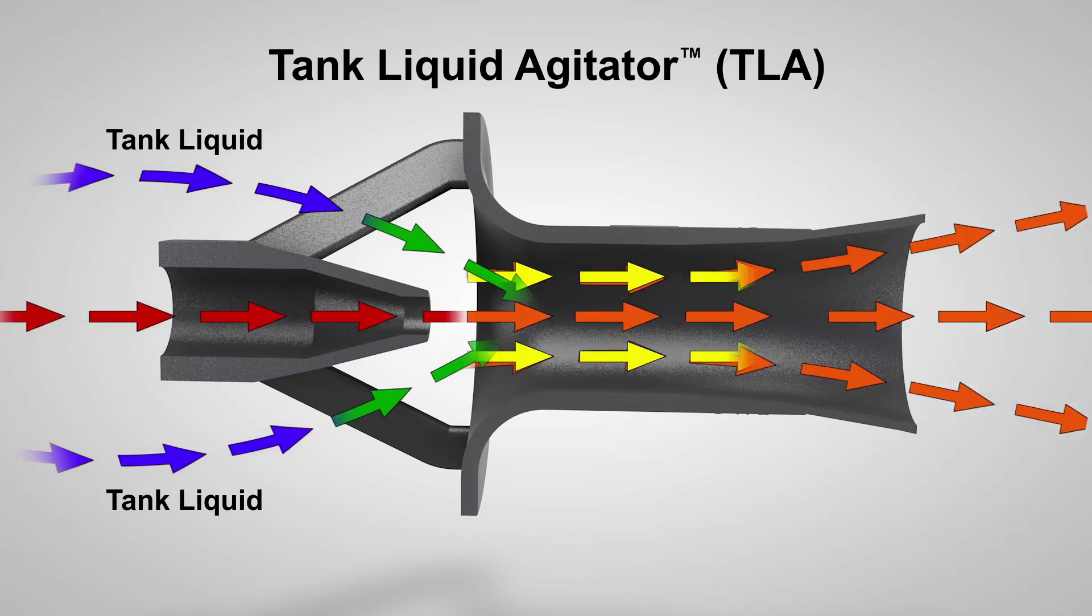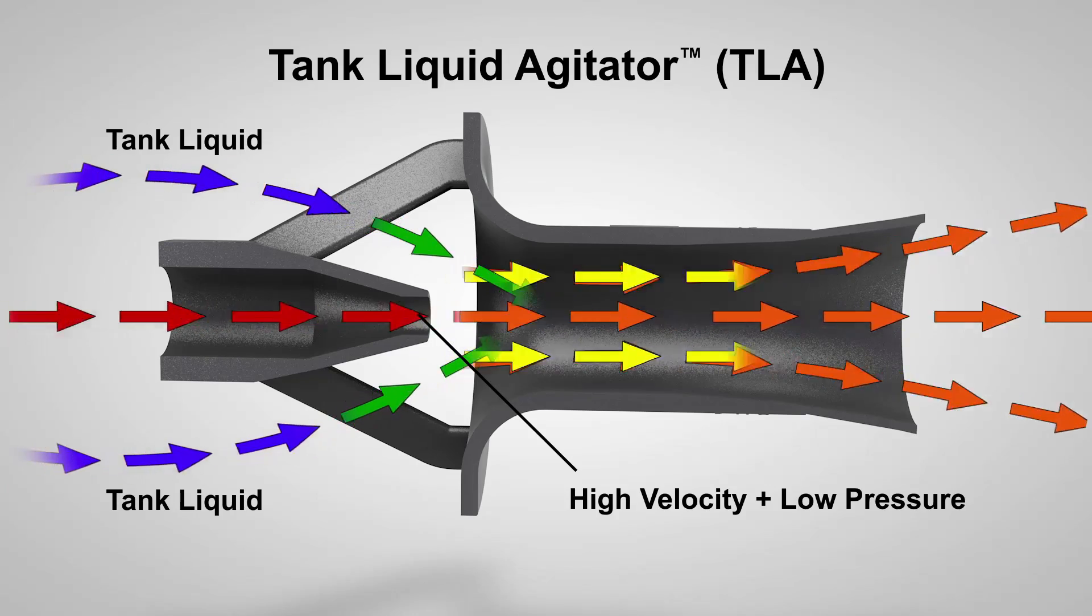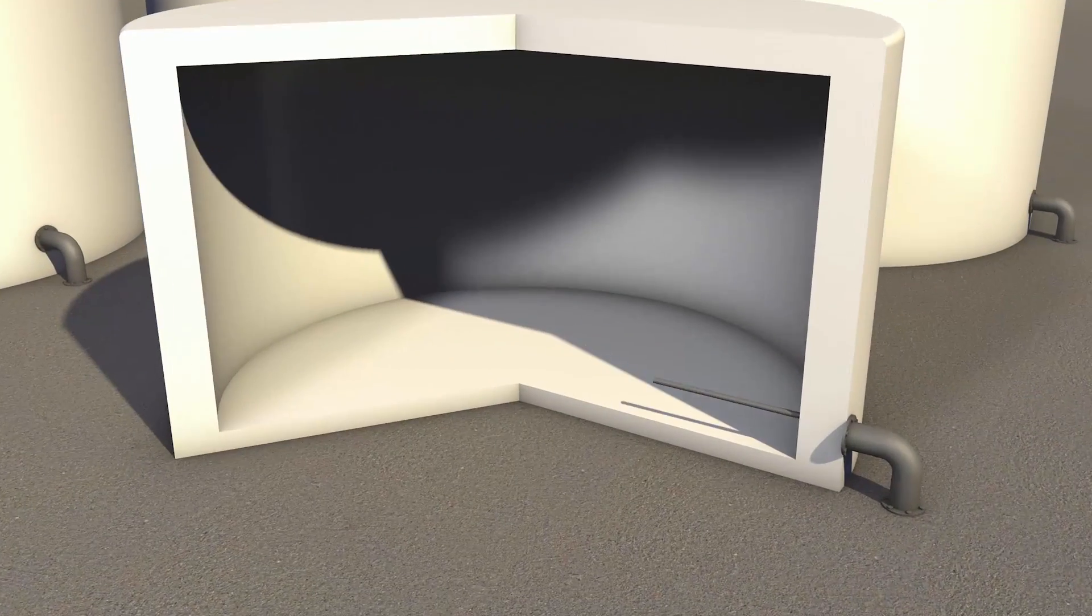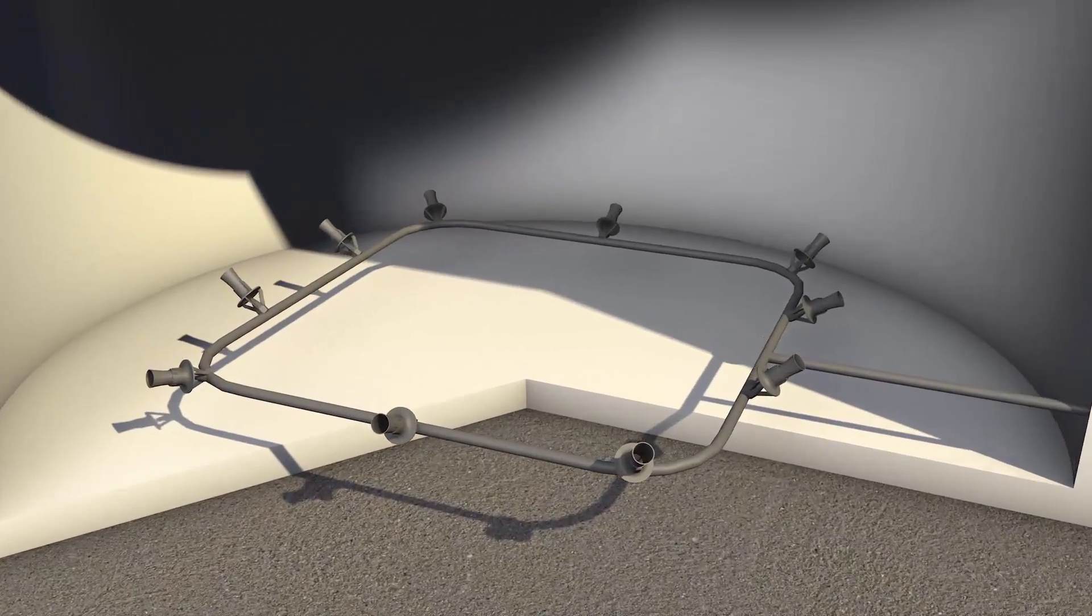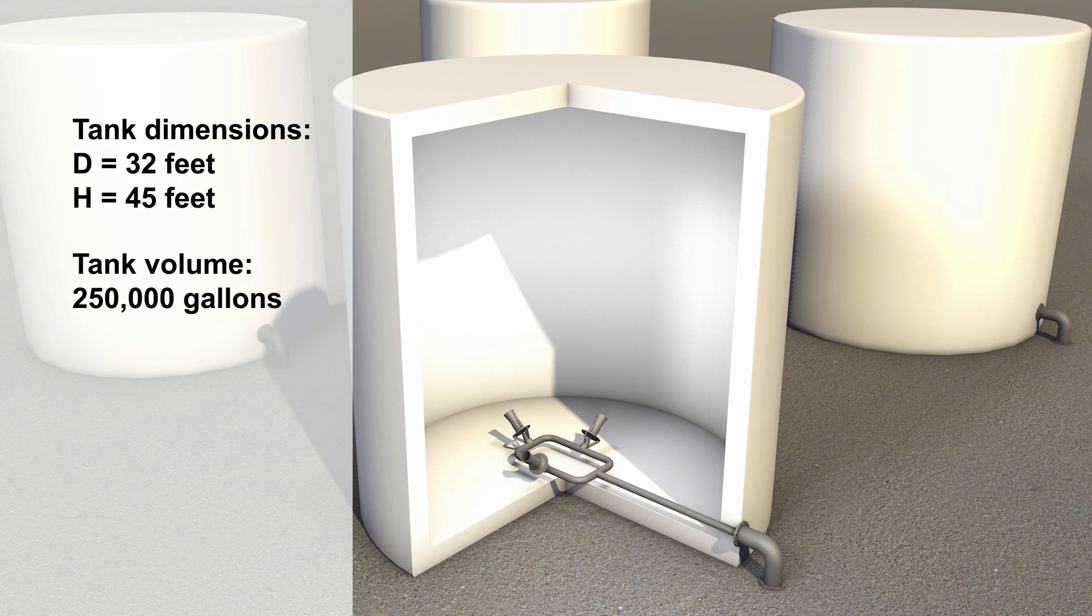We will use your data and goal of mixing to design your system. This tank has a diameter of 32 feet, a height of 45 feet, and a volume of 250,000 gallons. The liquid is water. The turnover time requirement for blending was one hour.